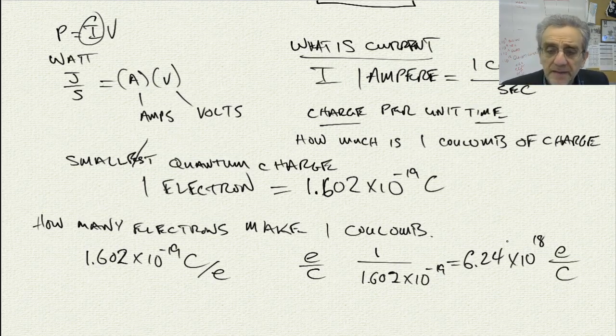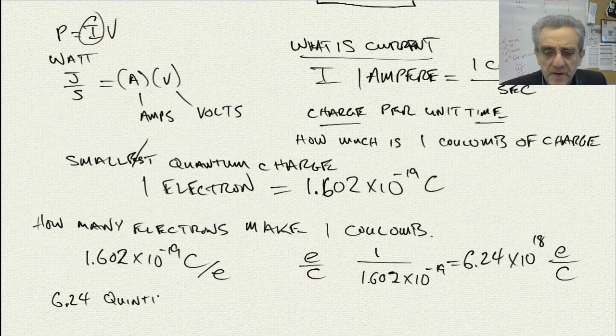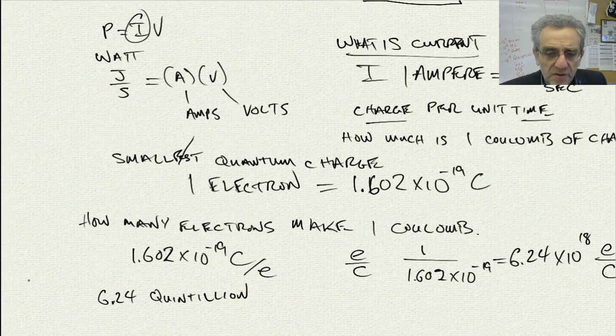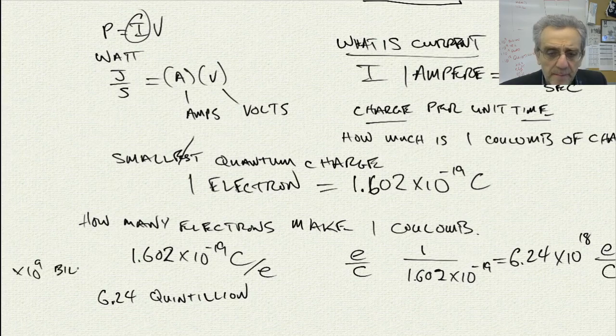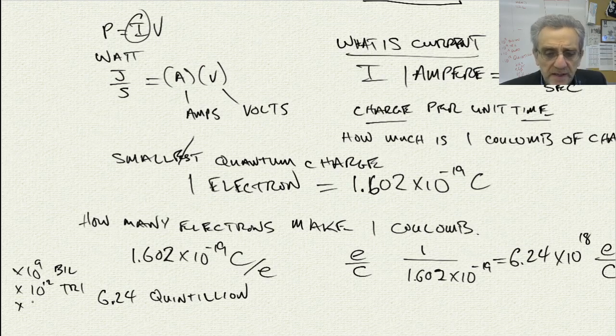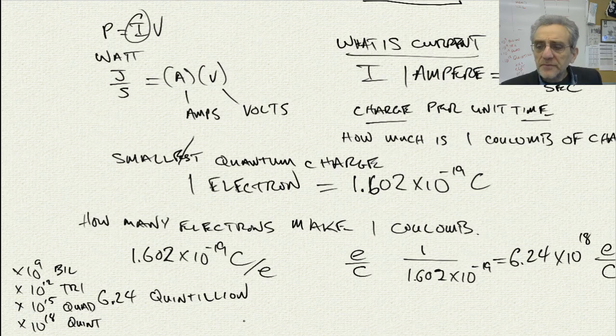Now, that's a lot. I think if we were to state it in terms of a number that we could read out, I think it'd be 6.24 quintillion. I think that's the way you write that. So just as a side note, there's 10 to the power of 9 is billion, 10 to the power of 12 is trillion, 10 to the power of 15 is quadrillion. And therefore, 10 to the power of 18 is quintillion. So that's a lot of electrons. It's beyond my imagination.